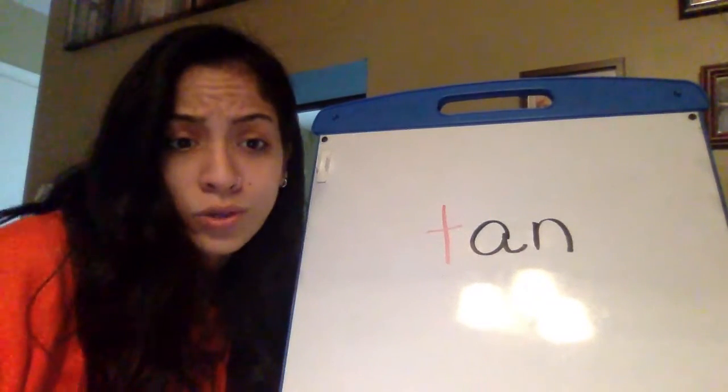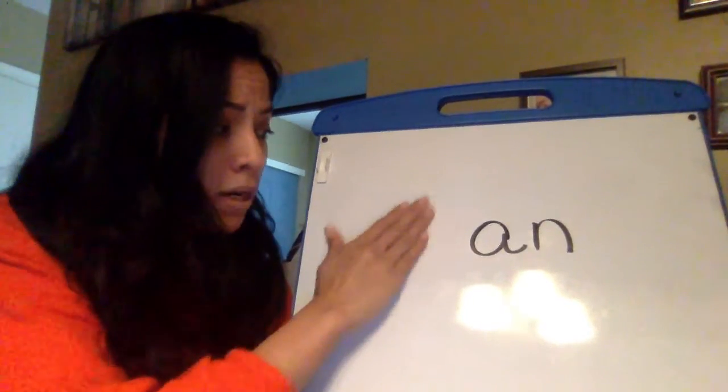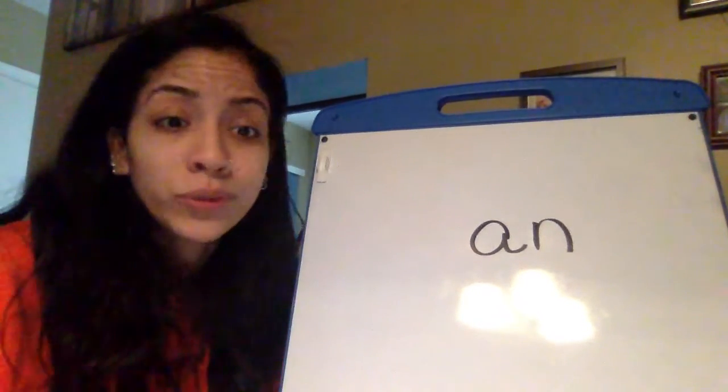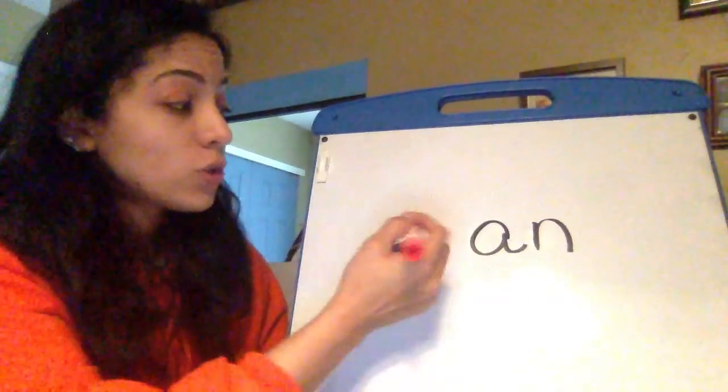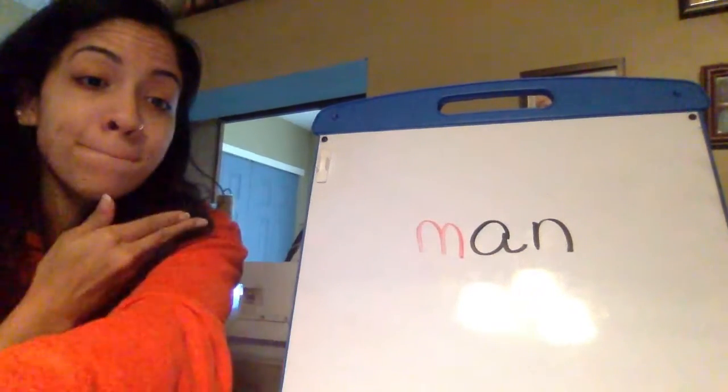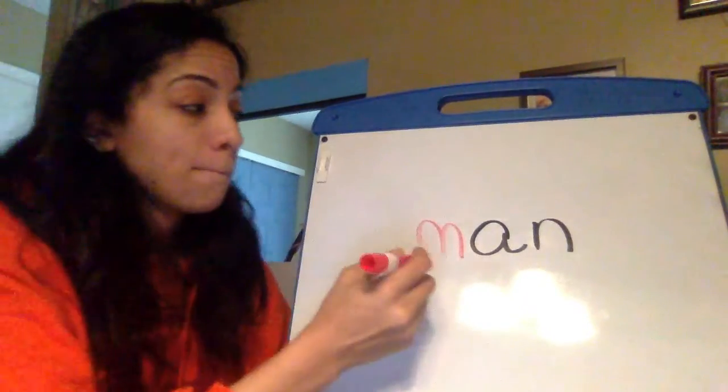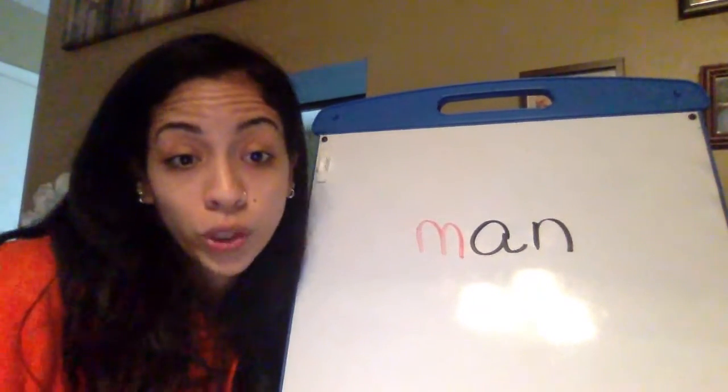But let's make it a new word. Hmm. Let's change this and make it a m. What letter would you write if it was a m and monkey? So m. So let's put that together. M, an, blend it. Man. So m, an. You can make a new word.